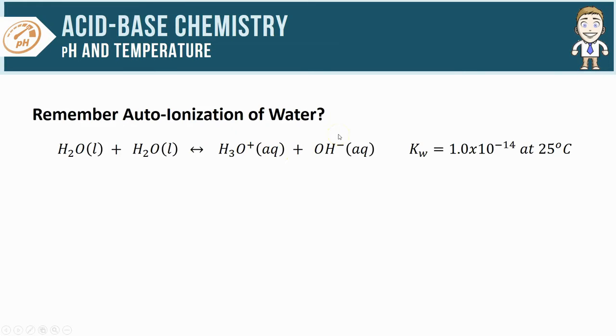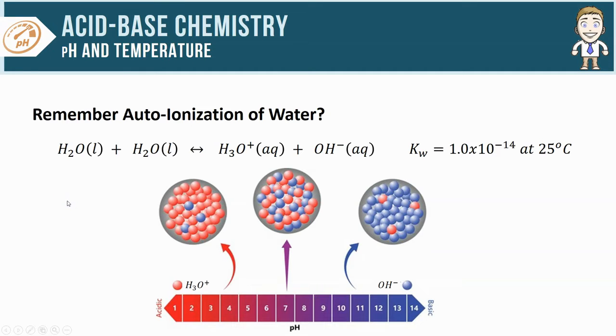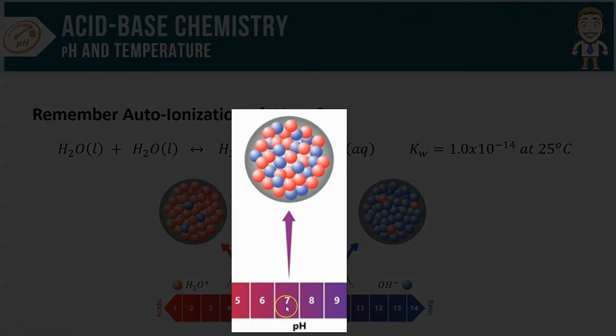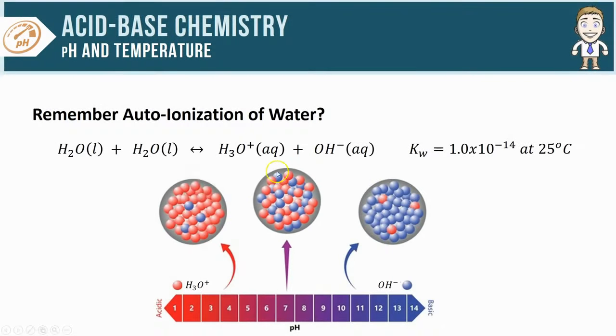All based on this K_w value, one of those relationships is the fact that a neutral solution that we think of as having a pH of 7 is going to have equal amounts of H3O+ and OH-.